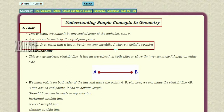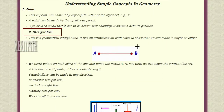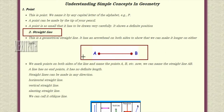Let us take two points and join them with a line segment. We call it a straight line. It has a straight path without bending in any direction. If the line has two endpoints, we call it a line segment.